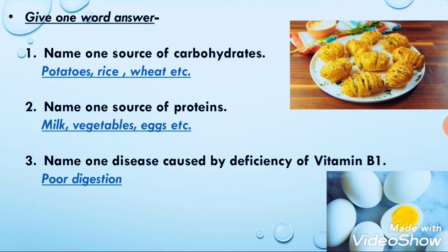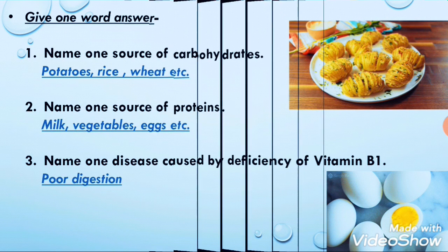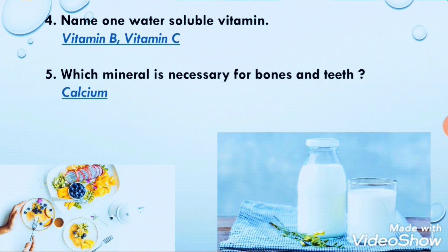Next: name one disease caused by the deficiency of vitamin B1. Deficiency of B1 causes poor digestion — the food we eat is not properly digested. Next: name one water soluble vitamin. Both vitamin B and C are water soluble, so you can write either one.